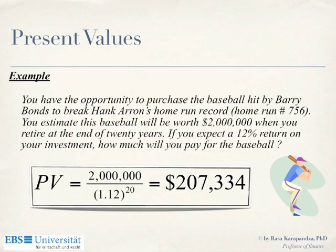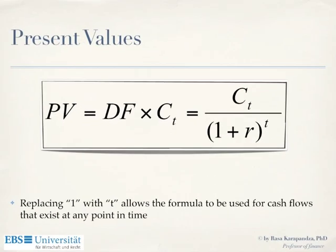Now let's generalize. Instead of C1, we have CT, where CT can be C1, C2, C3, C4 — it can be in any period of time. We can have many cash flows, and the present value of each one is the cash flow discounted by the corresponding discount factor.